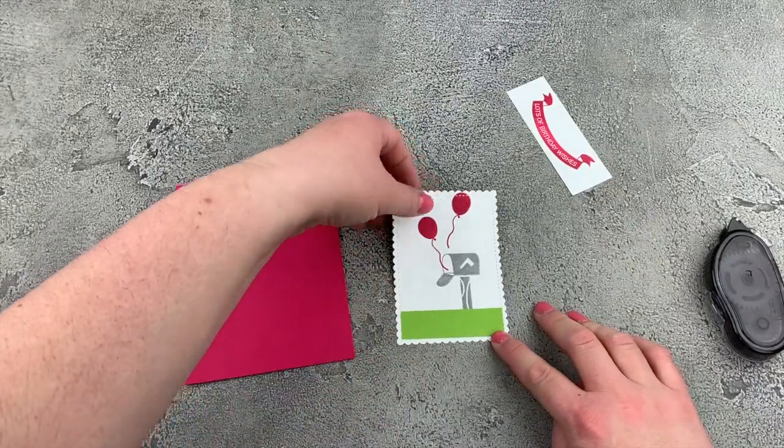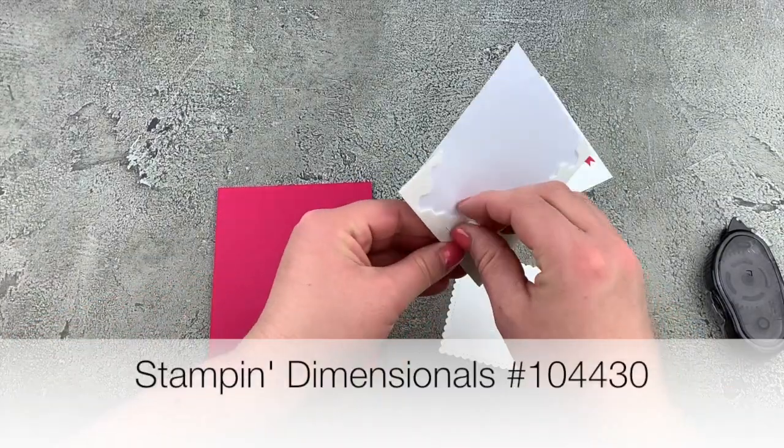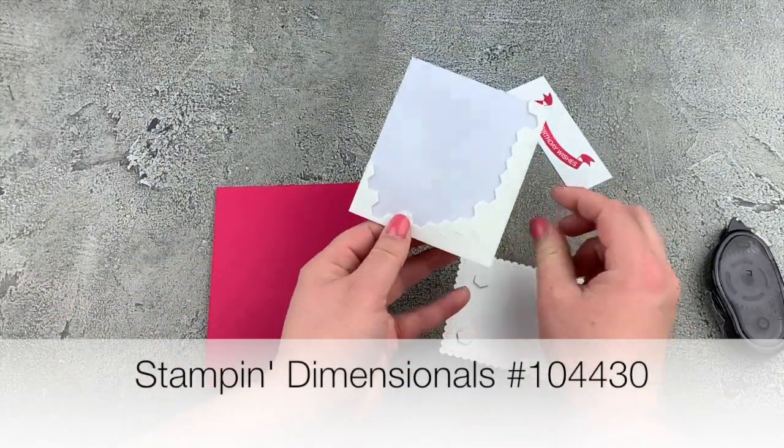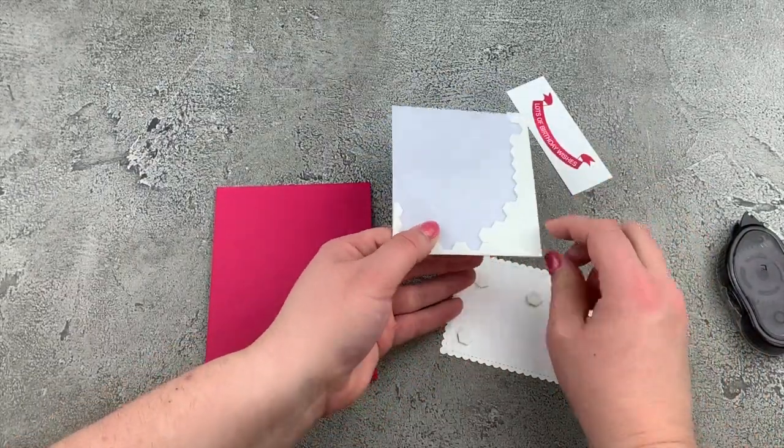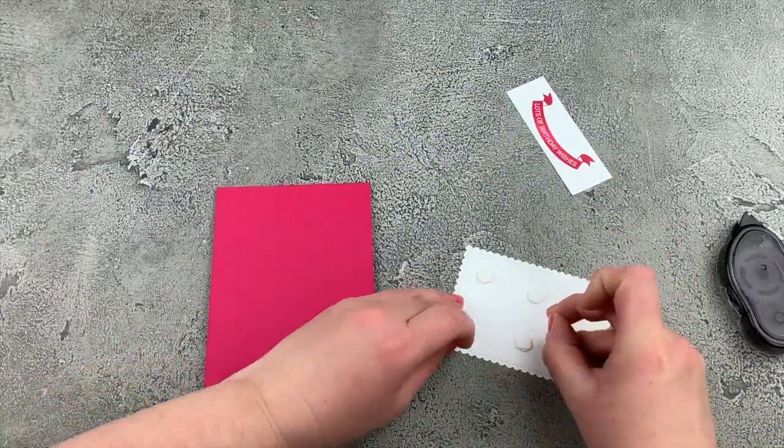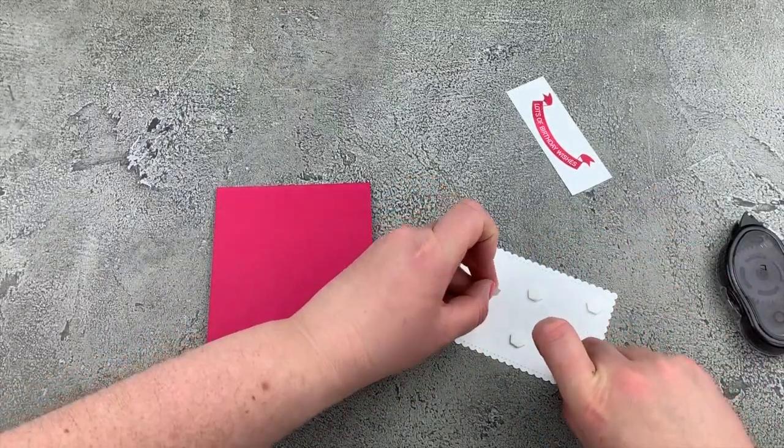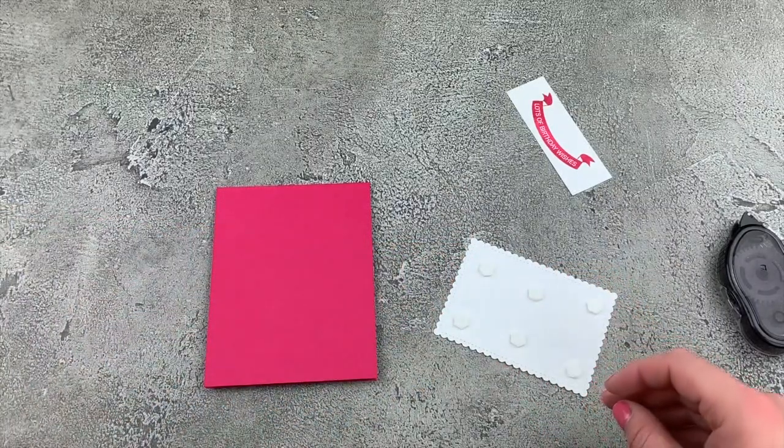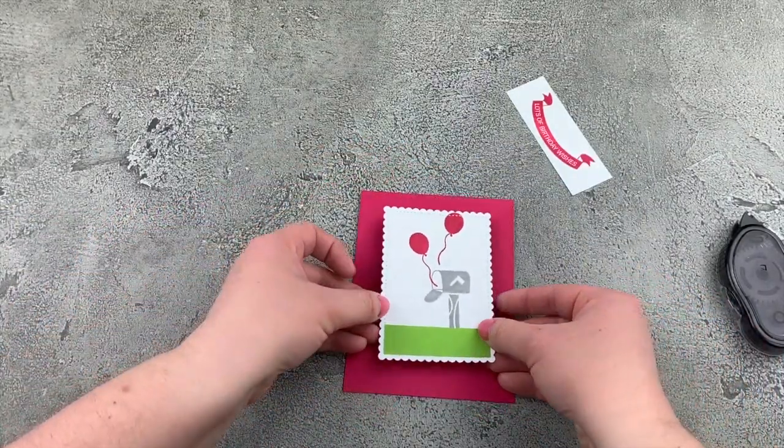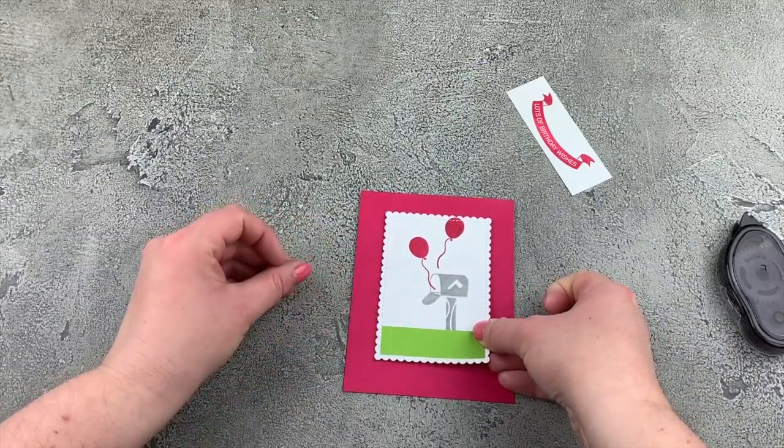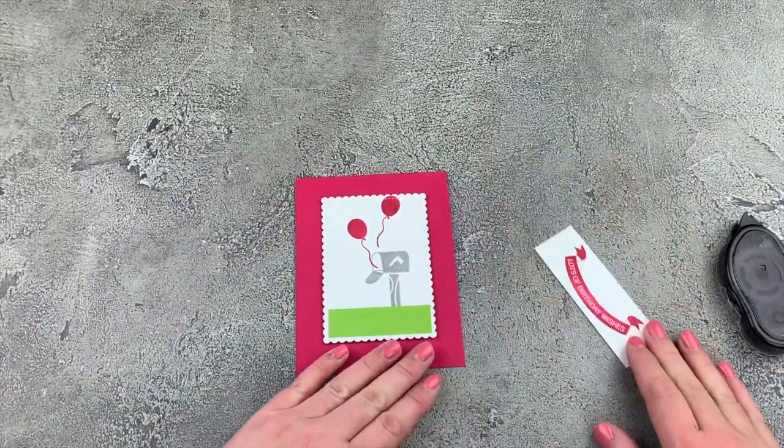We can now put this onto our card base with some Stampin Dimensionals. These will give your project that pop right off the page. I love these. All right. So we'll add those. And we'll just center that onto our card front. There we go. All right.